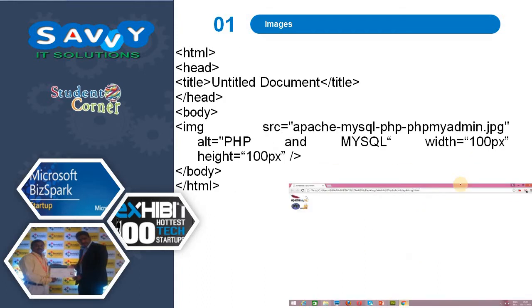In the second example, we specify the width and height values. Automatically, the image is displayed in a smaller size, not in actual size.